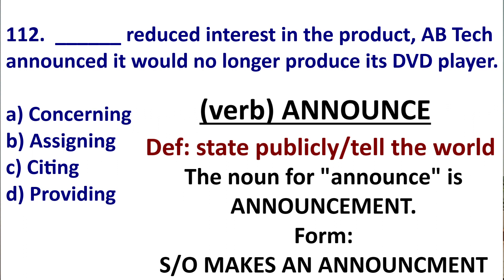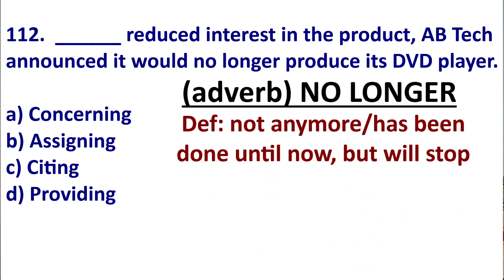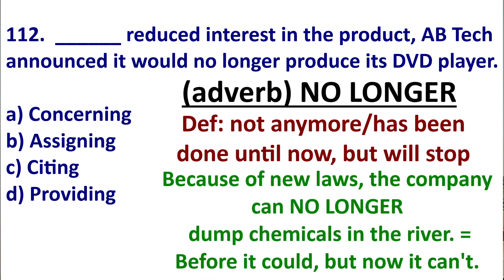In this TOEIC question, the company is telling the world. The next vocabulary item is the adverb 'no longer.' No longer means something has been done until now, but it will stop — it will not happen anymore. Here's an example: because of new laws, the company can no longer dump chemicals in the river. So in the past, the company dumped chemicals in the river, but starting now, they will no longer dump chemicals.